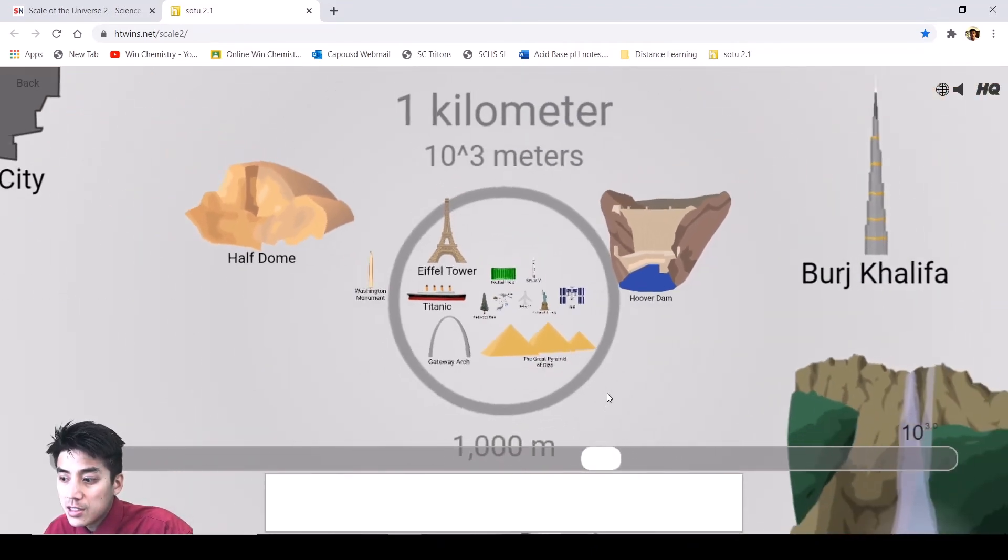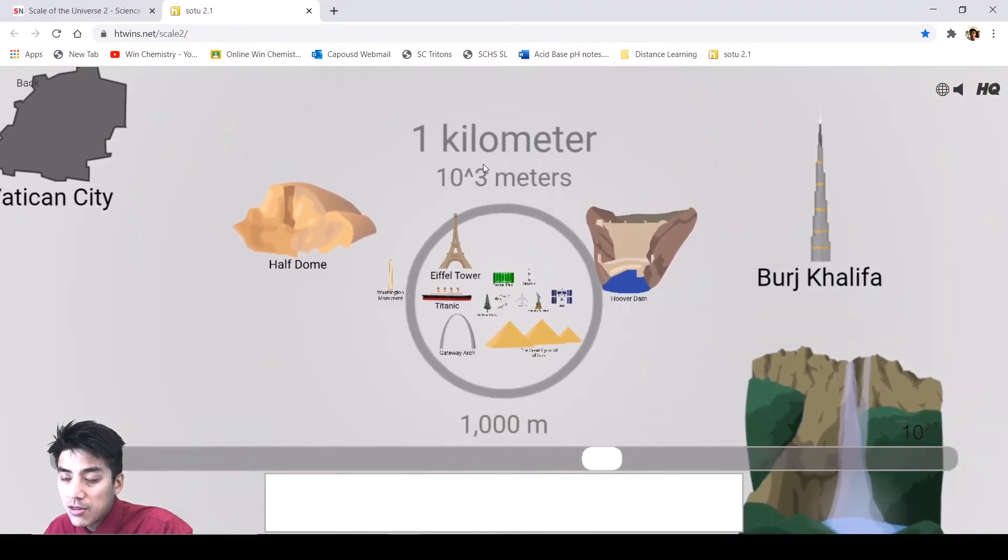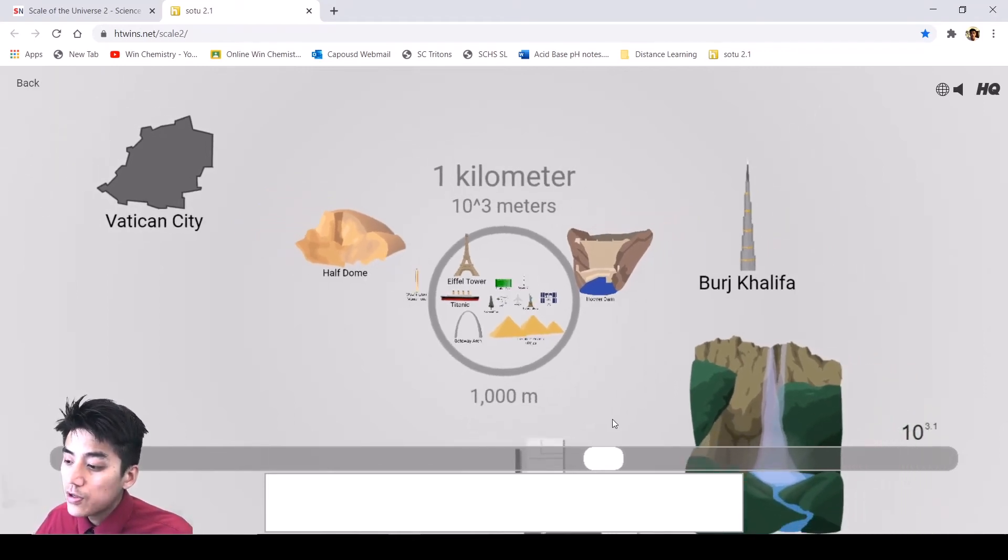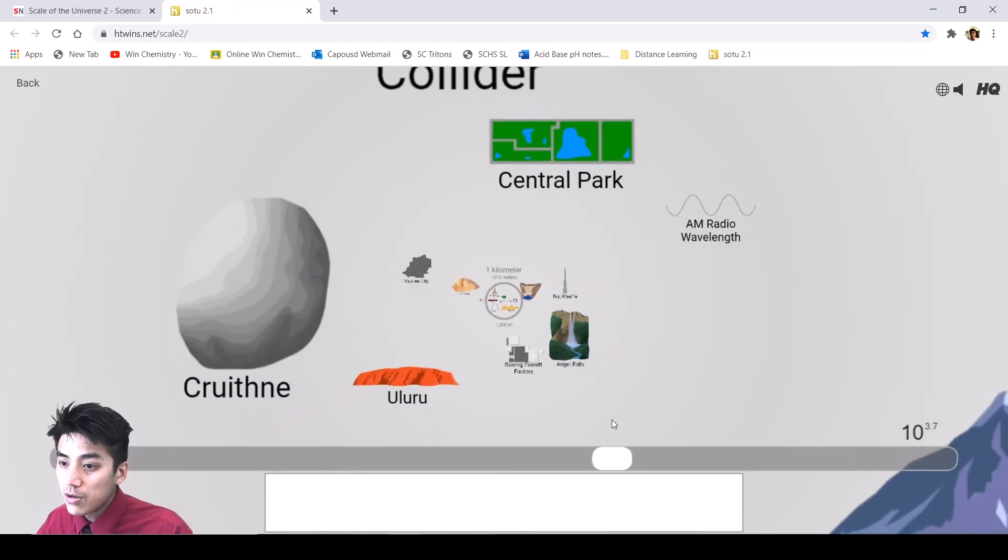And by the time you get to 10 to the third power, 10 to the third, if you look on the prefix chart, is kilo. So the prefix kilo means 1,000. These are all things in the realm of being 1,000 times bigger than you. So the Eiffel Tower, the Titanic, the Half Dome in Yosemite, the Burj Khalifa. It's within the neighborhood. It's not perfect. Some of these could be like 10 to the 3.5, 10 to the fourth power. But the idea is if your exponent is increasing, you're getting bigger and bigger things.